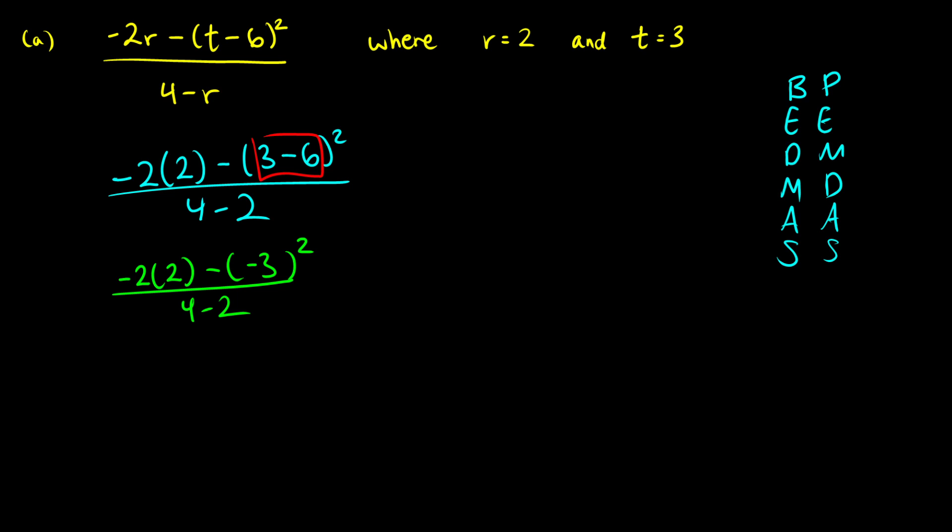Okay, next we're going to work on exponents. So we're going to do this negative 3 squared. So our next step is going to be negative 2 times 2. Then we're going to subtract negative 3 squared. Well, this is the same thing as negative 3 times negative 3, which gives us positive 9. So we're subtracting 9 here, and this is all over 4 minus 2.